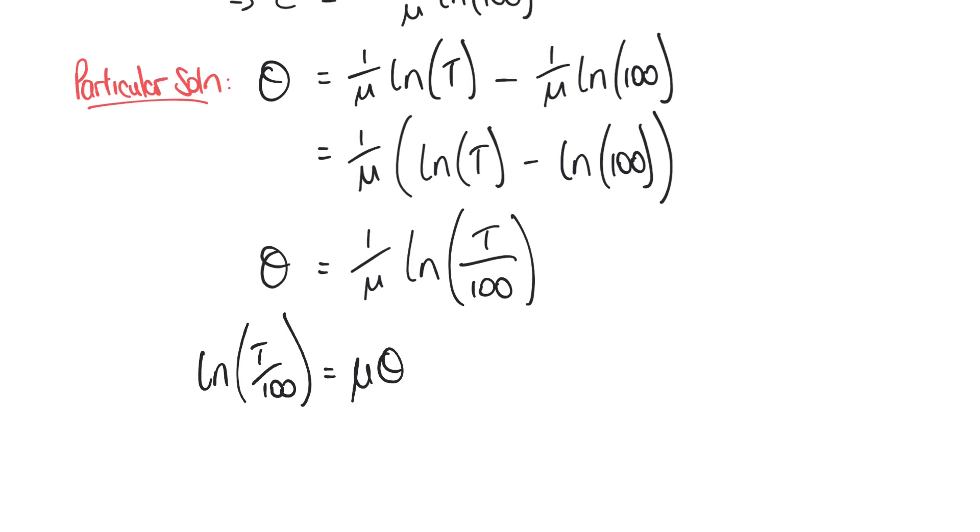And then we're going to take exponentials of both sides or raise each side of the equation as a power of e. And so what we have is on the left-hand side, our exponential and natural logarithm are seen to cancel one another out in a way. And we're simply left with T/100. And on the right-hand side, we've raised μθ as a power of e. So we have e to the power μθ. And then finally, some rearrangement multiplying both sides by 100, we have T equals 100e to the power of μθ.